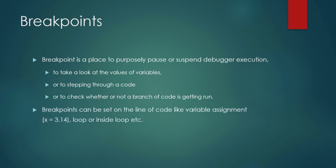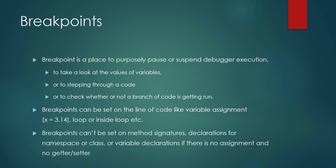Now let us see where we can set a breakpoint. In our program there are multiple statements, so on which statement can we put a breakpoint? Generally, we can put a breakpoint on any line of code — variable assignment, loops, all the code inside loops. But there are some exceptions: you can't set a breakpoint on a method signature, on a namespace or class declaration, or on a variable declaration that has no assignment or getter/setter.